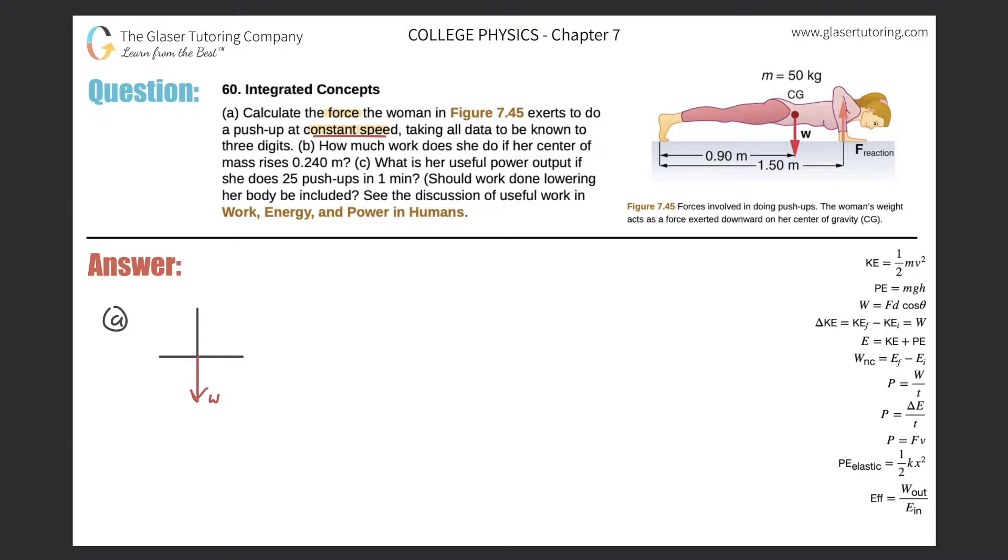Now it says that she's doing a push-up at constant speed, so what's the acceleration of this system? It's zero. And if it's zero, remember that the sum of the forces, if they equal zero, that must mean that they're all balanced. So what I mean by that is the force that she is applying, we'll call it FA.